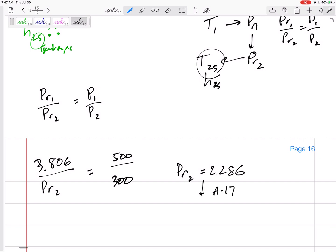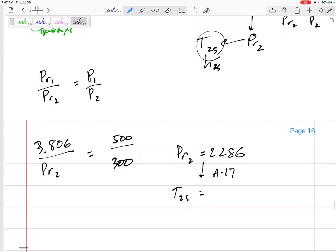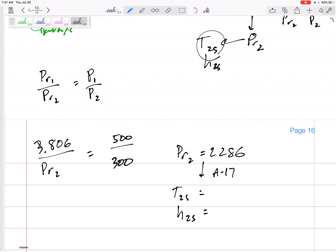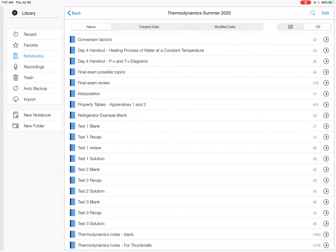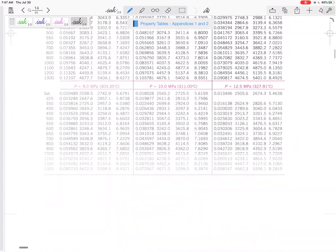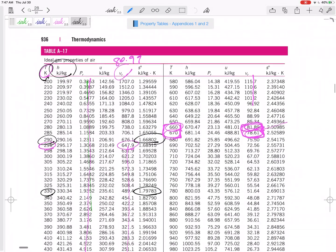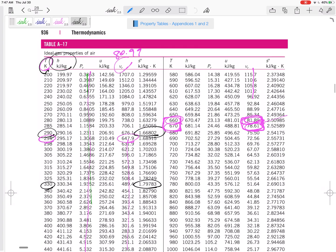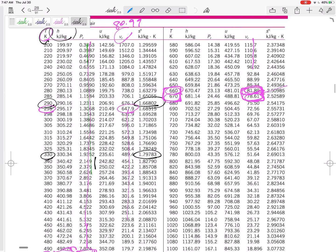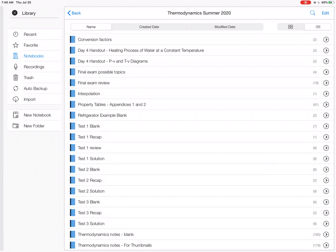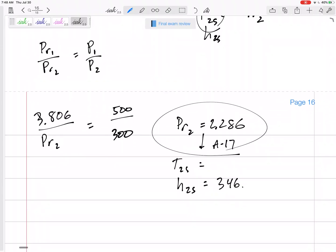From table A17, I'll probably have to interpolate to get h2s and T2s. I don't think I even need T2s, but I want h2s. Let me go to this table - 2.286. Property tables - this is air, be careful. I've got Pr of 2.286, interpolating between these two h values. I've got h2s - let me see if this makes sense - 346.3 kilojoules per kilogram.